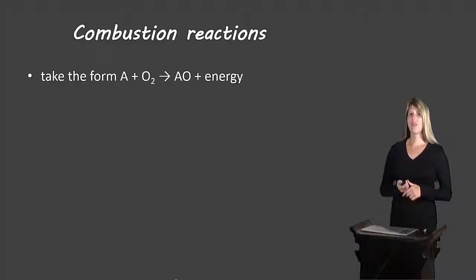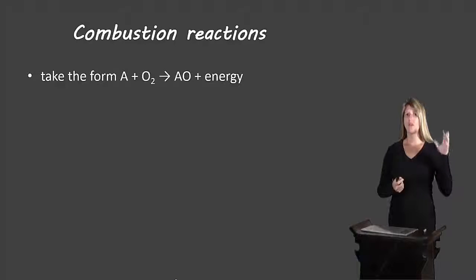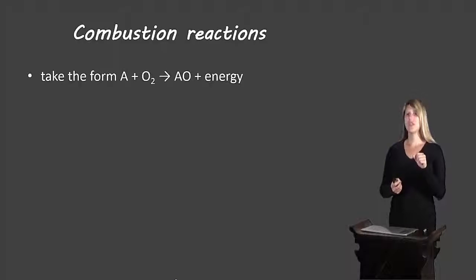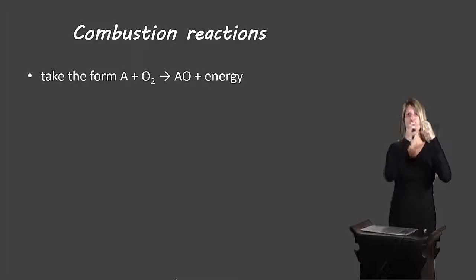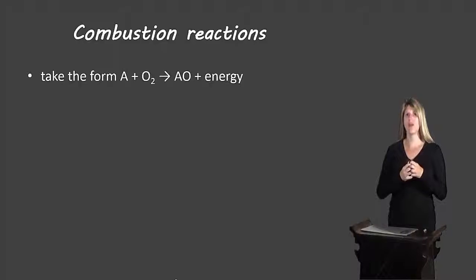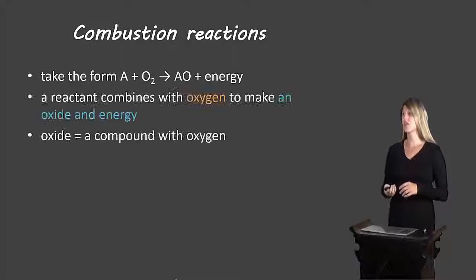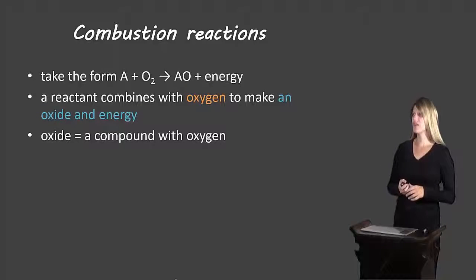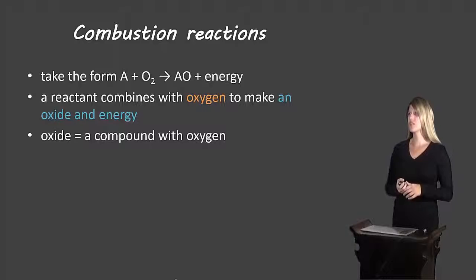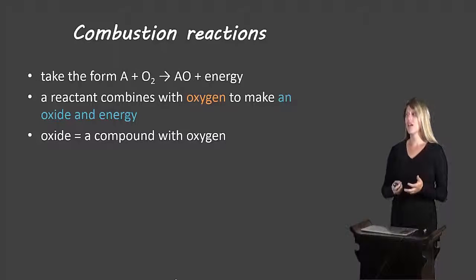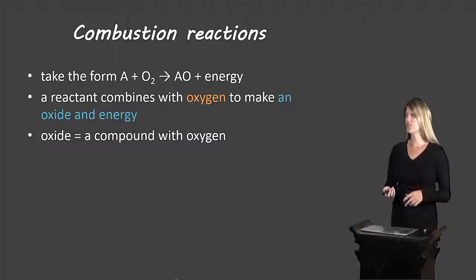Combustion reactions take the form A — a chemical — plus O₂, oxygen, to give us AO and energy. The elements and the oxygen come together and attach to make a new compound, and it also produces energy. So a reactant combines with oxygen to make an oxide, which is a compound with oxygen, and energy.